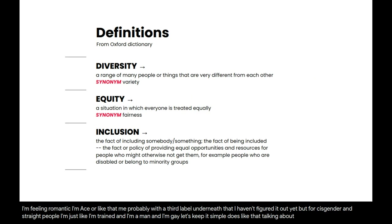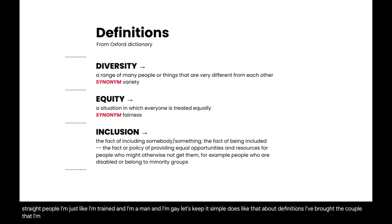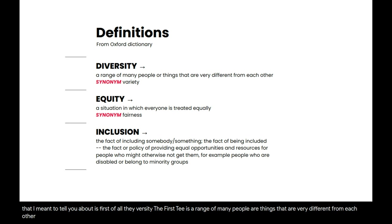Talking about definitions, I've brought a couple that I want to cover. First of all, diversity — diversity is a range of many people or things that are very different from each other. It's just a variety of people, variety of backgrounds, variety of ideas. That's basically it.